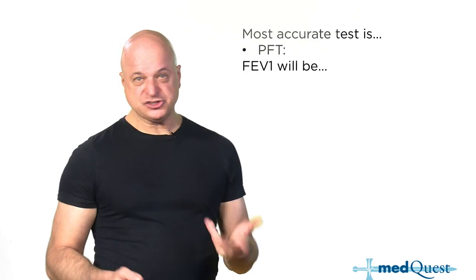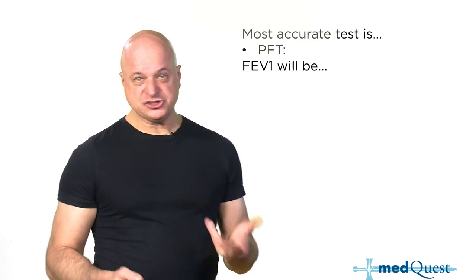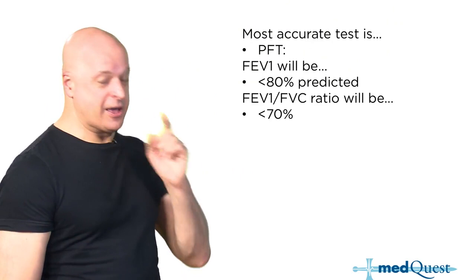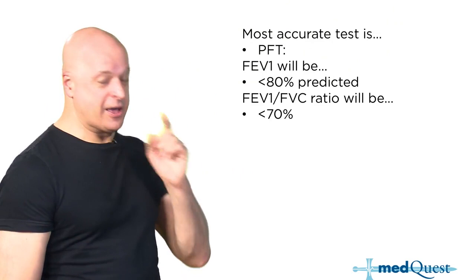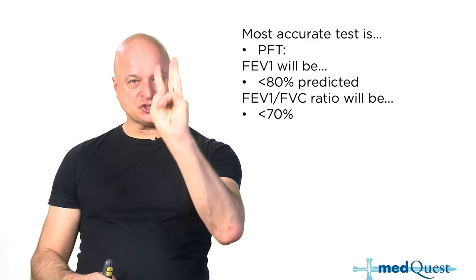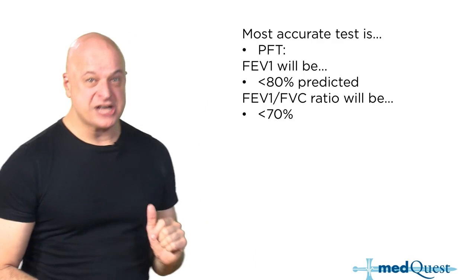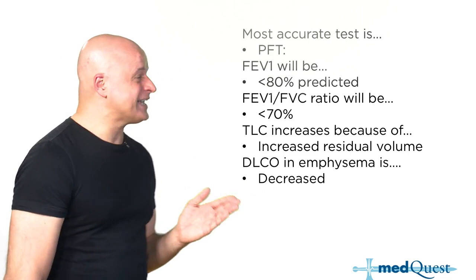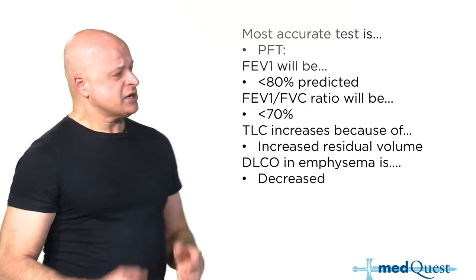The most accurate test is pulmonary function tests. You'll see a decrease in FEV1, which will be less than 80% of predicted. But remember the thing that's different about COPD and asthma is the ratio between them is especially down with a very low ratio less than 70%. If they were both down proportionately, it's not COPD. It's restrictive lung disease. Byssinosis, berylliosis, pneumoconiosis, asbestosis, pulmonary fibrosis if they're down proportionately.